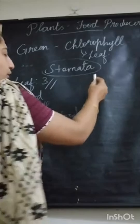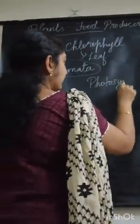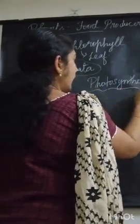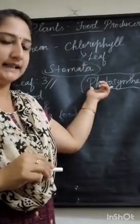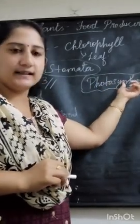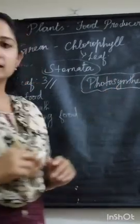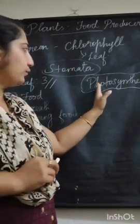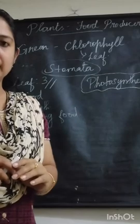Now we shall see the next process, which is called photosynthesis. 'Photo' refers to light and 'synthesis' refers to mixing everything together. So photosynthesis is the process of preparation of food by the plant.